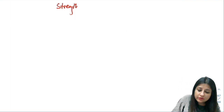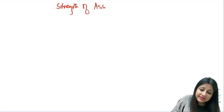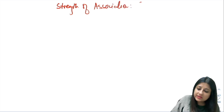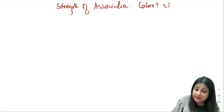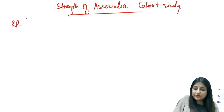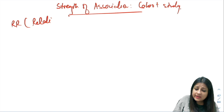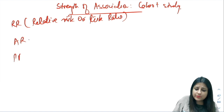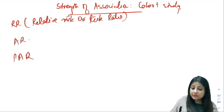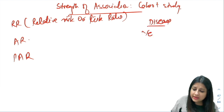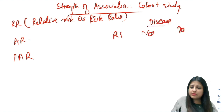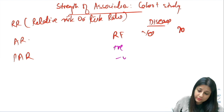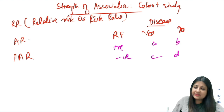Population attributable risk is one of the measures of strength of association, and these measures are used in a cohort study. We have three measures: relative risk, also called risk ratio, attributable risk, and population attributable risk. In the 2x2 table, disease is on the column side (yes/no) and risk factor is on the row side — present or not present — giving cells A, B, C, D.